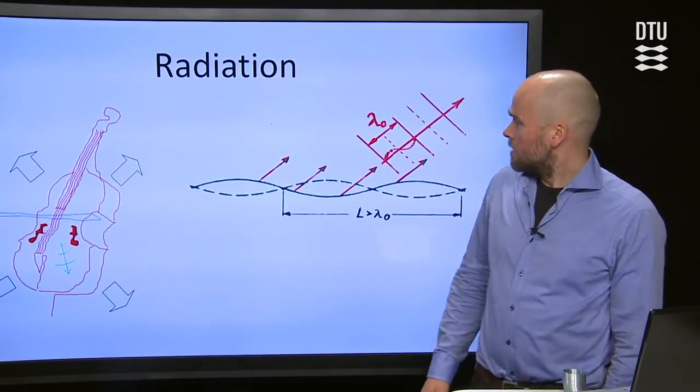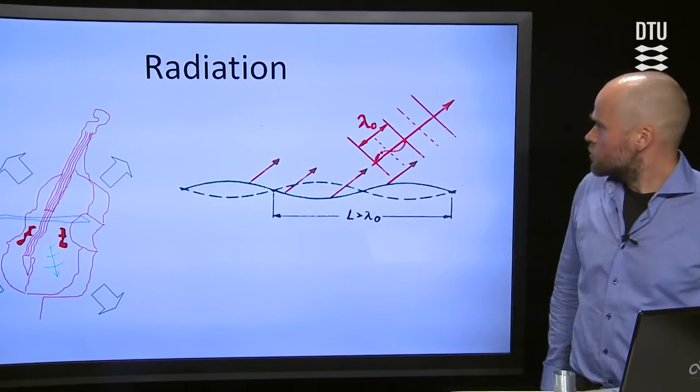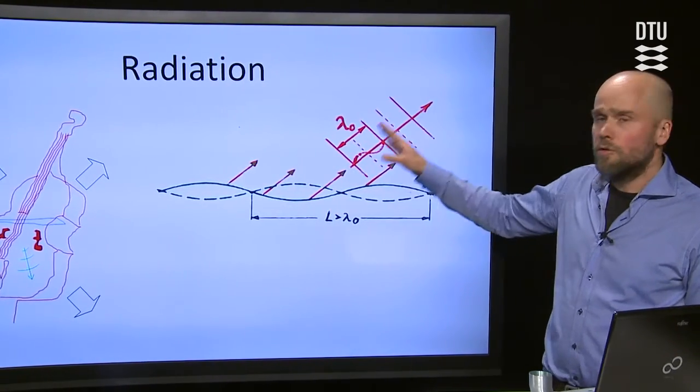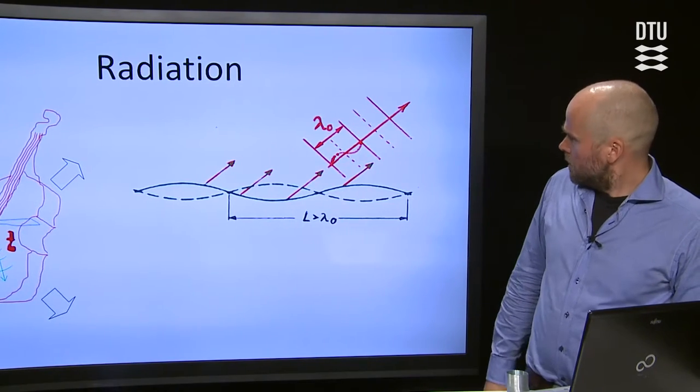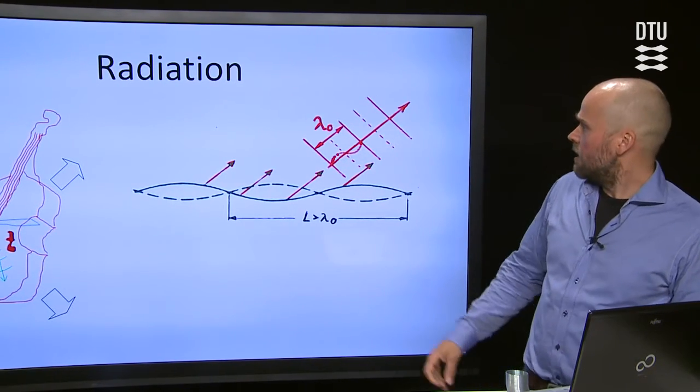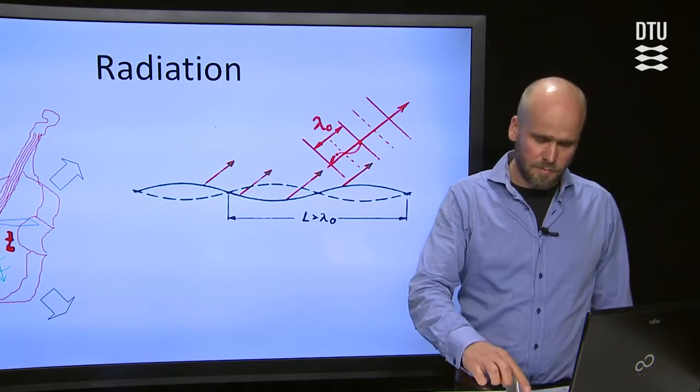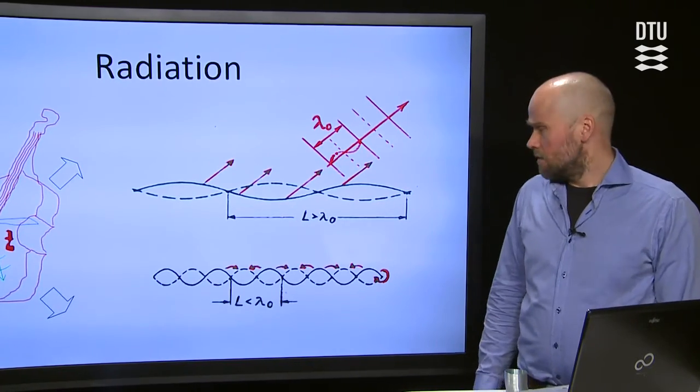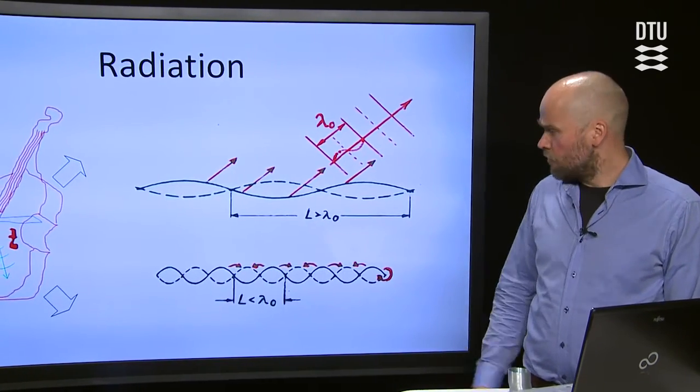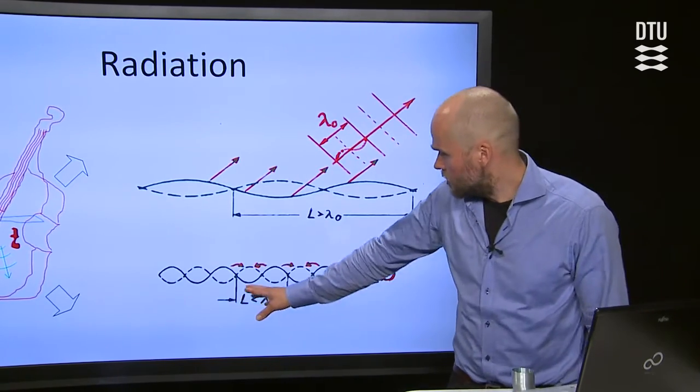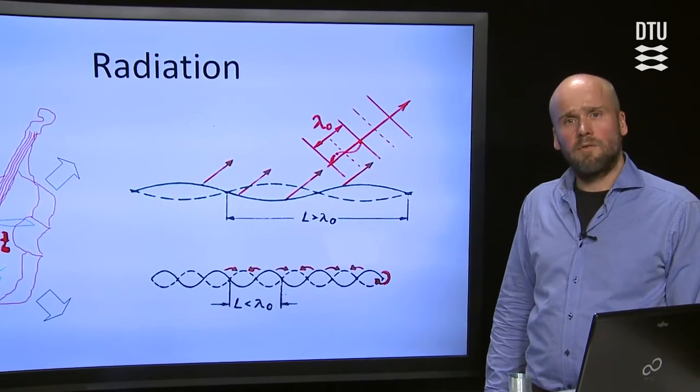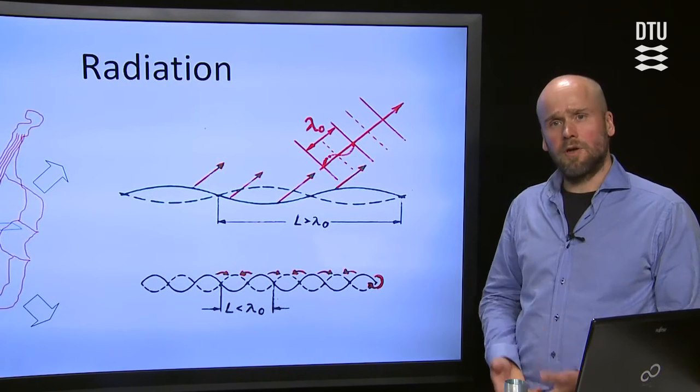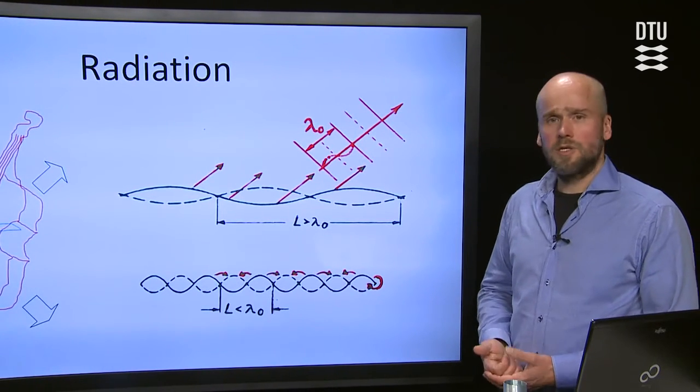So we have bending waves in the structure and they are coupling really well to the acoustic waves, especially at high frequencies where we'll have a matching of the wavelengths. This matching of the wavelengths will actually not happen at low frequencies when the wavelengths in the structure is smaller than the wavelengths in air. And then we will not have good sound radiation there.